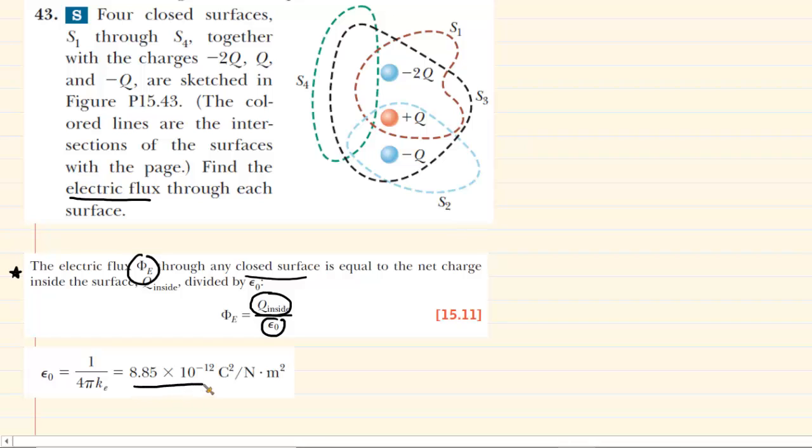For those who are interested, that value of epsilon is given right here. So basically, to find the electric flux, what we simply need to do is find the total charge inside of the Gaussian surface, and then divide it by a constant. We will see how straightforward this will be.